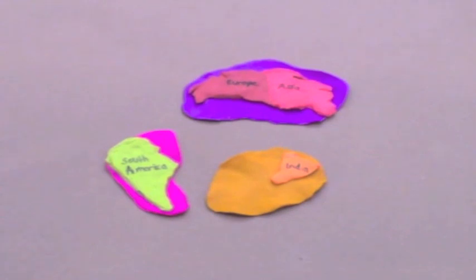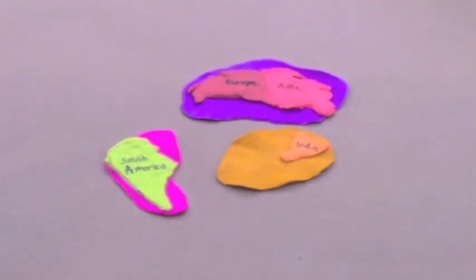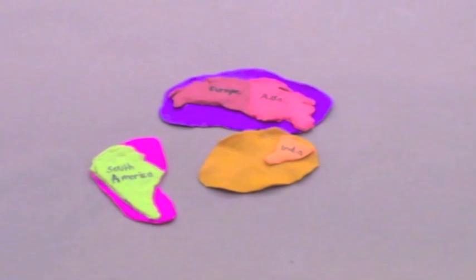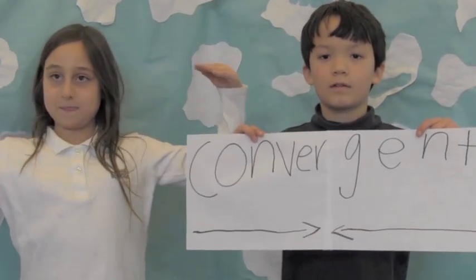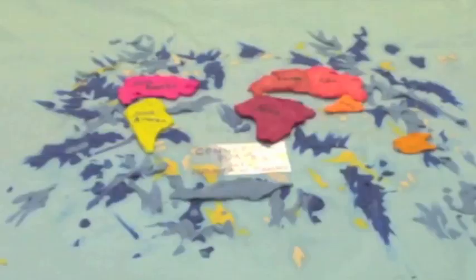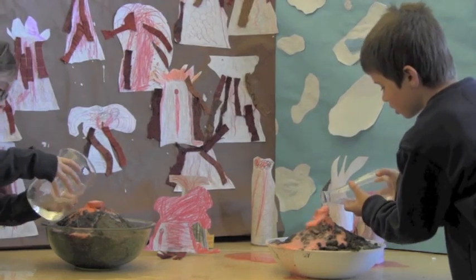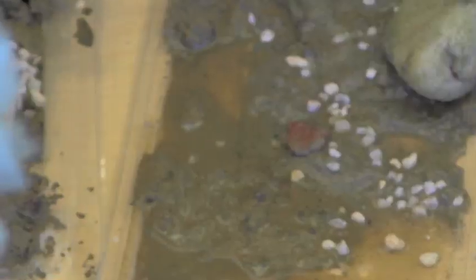The Earth is made of a dozen pieces of rock called plates, which fit together like a puzzle. The continents and oceans rest on these plates. Convergent plates are plates that come together, which can make a mountain. When India collided into the region, it made the Himalayan Mountains. Where plates meet, a lot can happen — like volcanoes, earthquakes, mountains, and trenches.